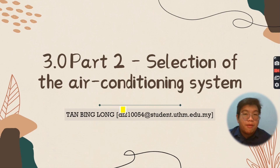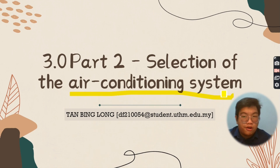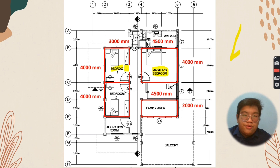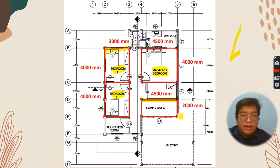Hi, my name is Bingo. In this video, I will present about the selection of the air conditioning system for our group project. Here is the floor plan of our group project. The area that I chose to install the air conditioner is at the master room, bedroom one and bedroom two, with identical dimensions of 3 meters by 4 meters, and also the family area on the second floor.